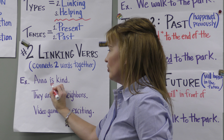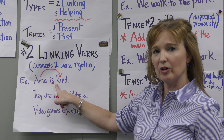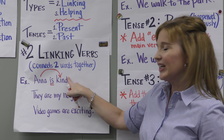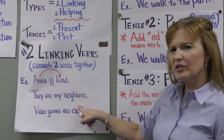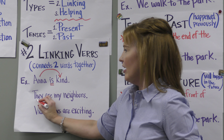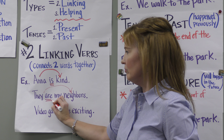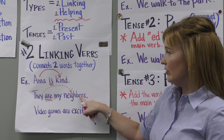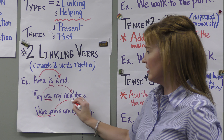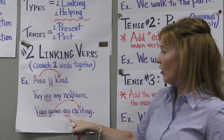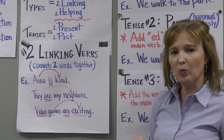Anna is kind. 'Is' is one of the most popular linking verbs. When I teach school, I always underline my verbs twice. It's linking the word Anna and connecting her with being kind — it's a linking verb. Usually over here in the predicate, you're going to get an adjective or a noun. Anna and kind. Look at this sentence: They are my neighbors. What two things are being linked? We have 'they' and we have 'neighbors.' What's linking them? It's the word 'are.' That's your linking verb. Video games are exciting — 'are' is linking video games and exciting. So 'is' and 'are' are probably the most common linking verbs. Is, are, was — those types of words.